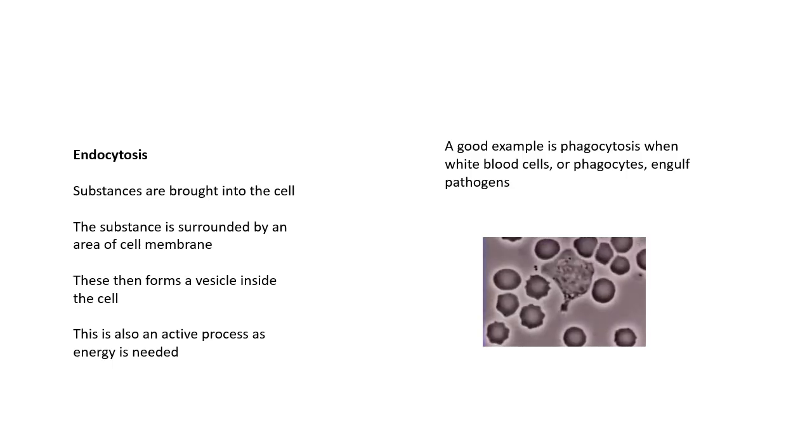A good example is this phagocytosis. It's phagocytosis, when white blood cells or phagocytes engulf pathogens. Exo, stuff going out of the cell. Endo, stuff coming into the cell.